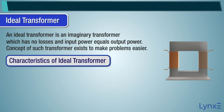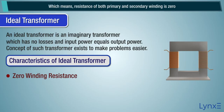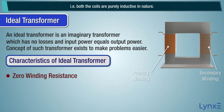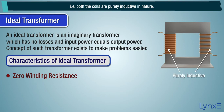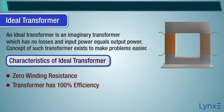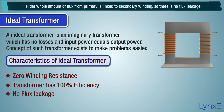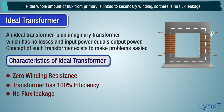Characteristics of an ideal transformer are: Zero winding resistance, which means resistance of both primary and secondary winding is zero — that is, both coils are purely inductive in nature. The transformer has 100% efficiency, so there are no losses and input power equals output power. No flux leakage — the whole amount of flux from primary is linked to secondary winding.